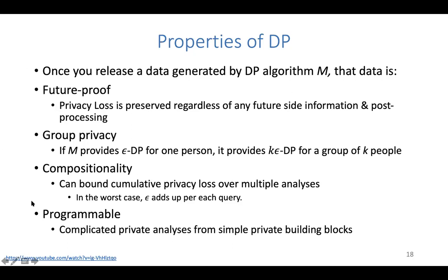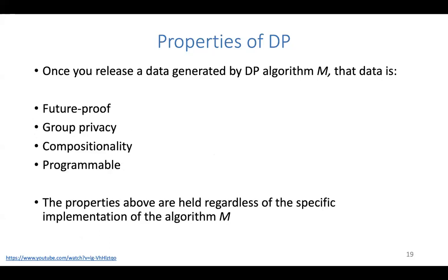These four properties — future-proofness, group privacy, compositionality, and programmability — are very useful. Importantly, they hold regardless of the specific implementation of algorithm M. As long as M is guaranteed to provide epsilon differential privacy, all these properties come along with it automatically.